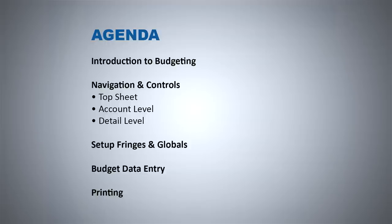After that, we'll set up our fringes and our globals. Fringes are like taxes and guild fees we'll have to account for in the budget. Globals are shortcuts that are going to help us as we put data in a lot of different places within the budget. Then we'll do the fun stuff — budget data entry and add a few examples. After that, we'll move into printing and talk about sharing your budgets out with various people.